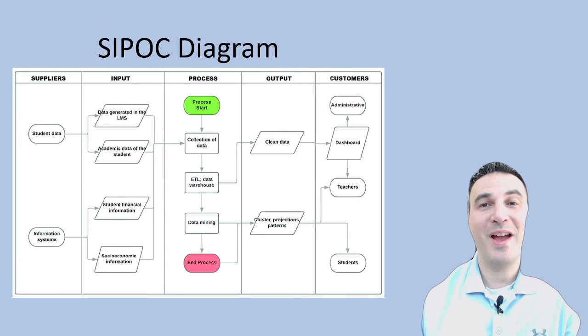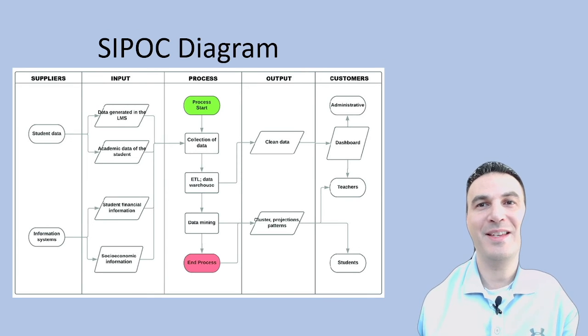SIPOC, which stands for Suppliers, Inputs, Process, Outputs, and Customers, is a mapping technique that provides a high-level overview of a process. It helps identify key elements and stakeholders involved in the process, facilitating a comprehensive understanding. SIPOC diagrams are instrumental in defining the scope of improvement projects and ensuring that all relevant factors are considered.